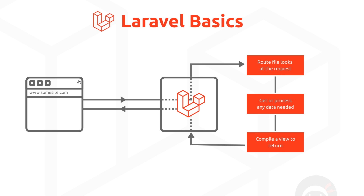As an example: the forward slash route comes in, we look at that URL, and since it's just forward slash we probably don't need to get any data, so we just compile a home view — a home HTML file — and send that to the user so they see the home page. If it was forward slash users, we'd look at that in the route file and say they want the users page, so we get a list of all users from the database, inject them into a blade view, compile it into HTML, and send it back — an HTML page with all the users in it.